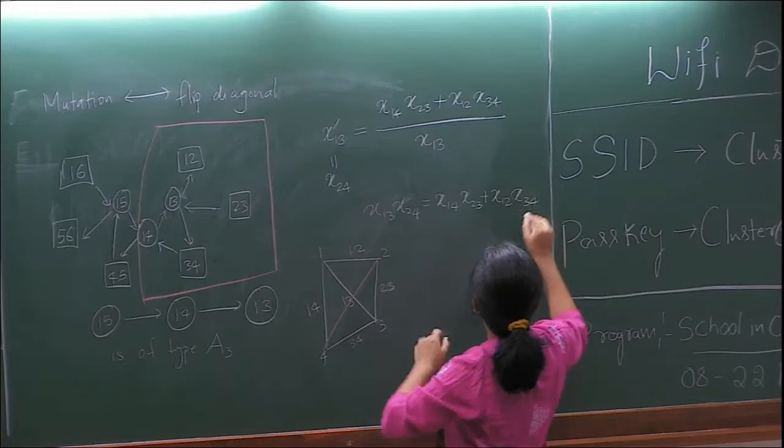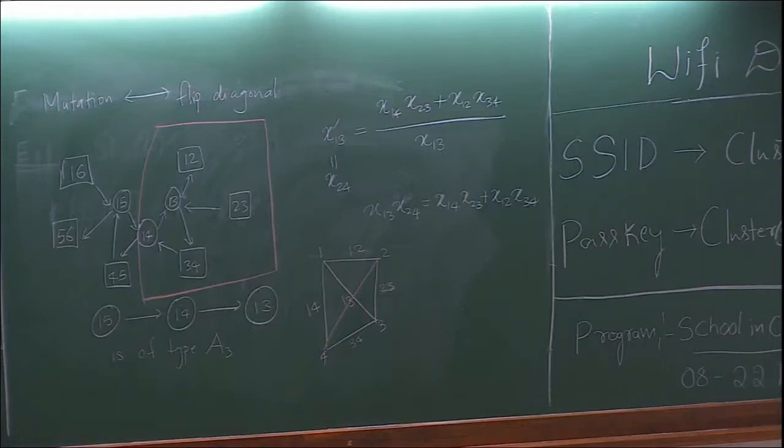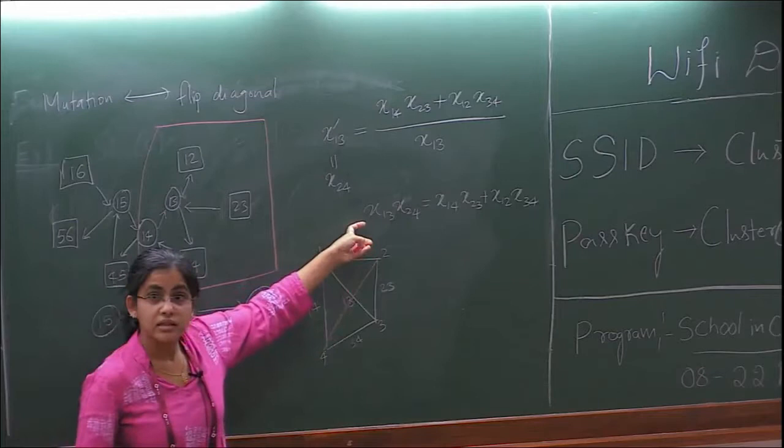If you replace x by δ, this is exactly the Plücker relation — and you can see it matches the same mnemonic. So mutations do give you Plücker relations. In the next lecture I will generalize from G(2, n+3) to G(k, n).